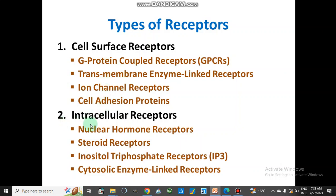The second major type is intracellular receptors. Intracellular receptors are present inside the cell — inside the nucleus, nucleoplasm, or cytoplasm. These include nuclear hormone receptors, steroid receptors, inositol triphosphate (IP3) receptors, and cytosolic enzyme-linked receptors. We will now discuss each one in detail.